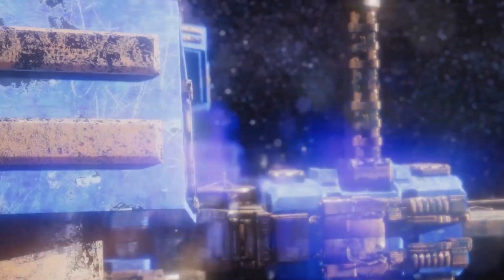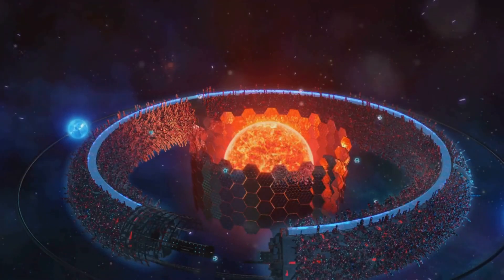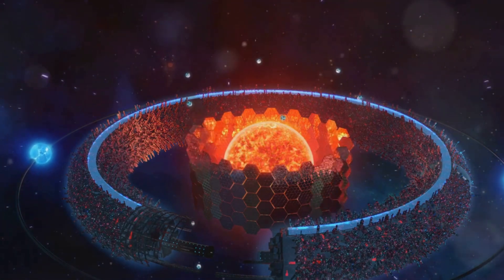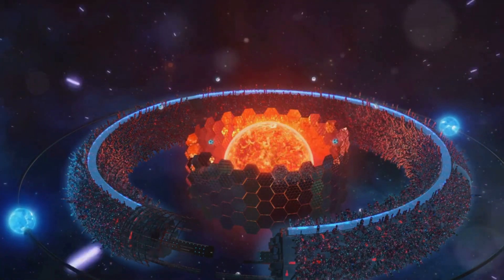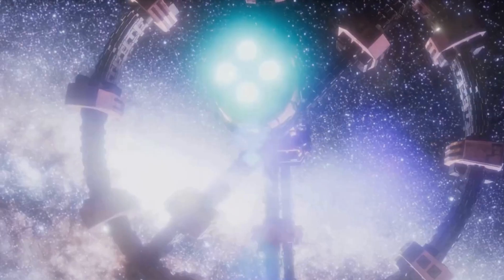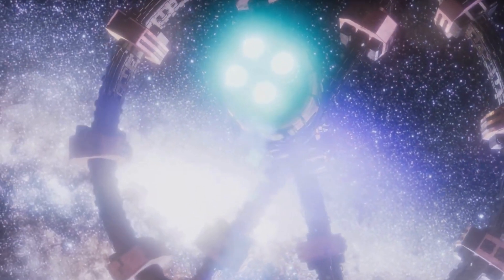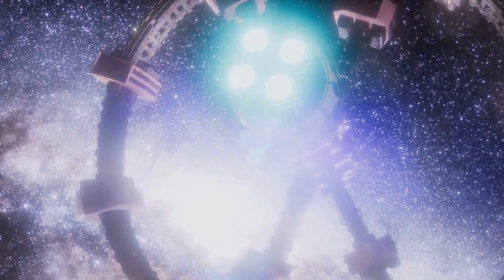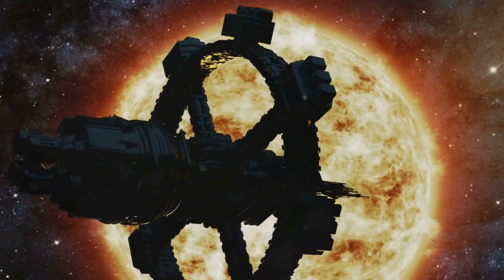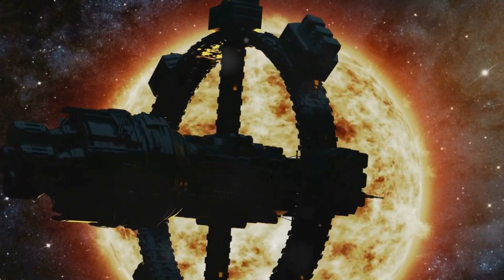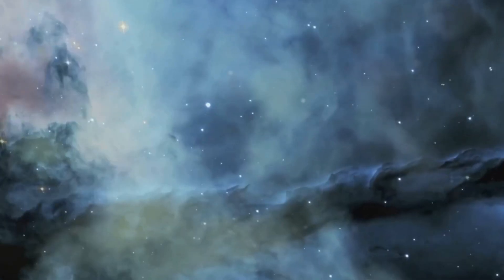Next up we have the Type 2 civilization, a stellar society that has moved beyond its planetary confines and can now harness all the energy of its star. Picture a civilization that has built a Dyson Sphere, a megastructure that encapsulates their star, capturing every speck of its output. They've tamed the power of a star, turning its light and heat into a resource to fuel their society's ever-growing needs.